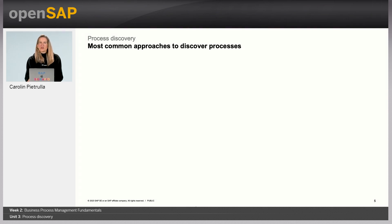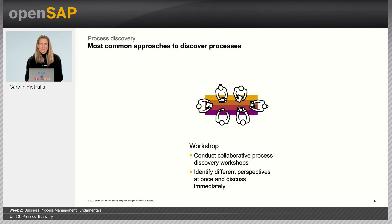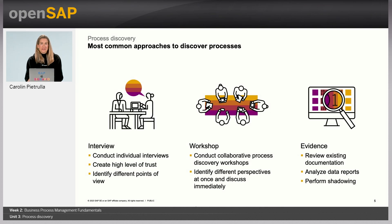There are three common approaches to discover processes and find out how things are really done. We can simply ask people who are really performing them by conducting interviews or workshops. Conducting interviews with individuals may be a little more time-consuming, but it has the advantage of creating a higher level of trust between the interviewee and the interviewer, which leads to honest answers and displays different points of view.